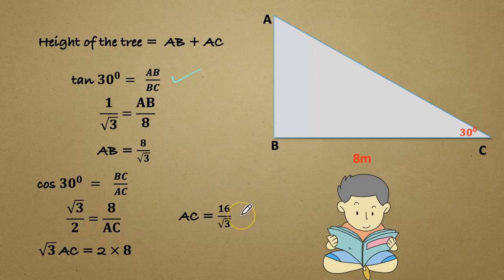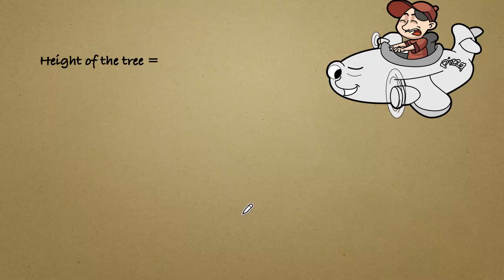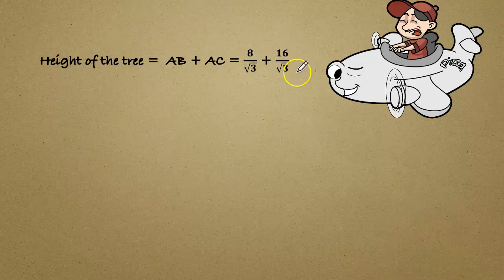Now we got both sides. Now let us find the height of the tree. Height of the tree equals AB plus AC which is 8 divided by root 3 plus 16 divided by root 3. 8 plus 16 is 24, 24 by root 3.